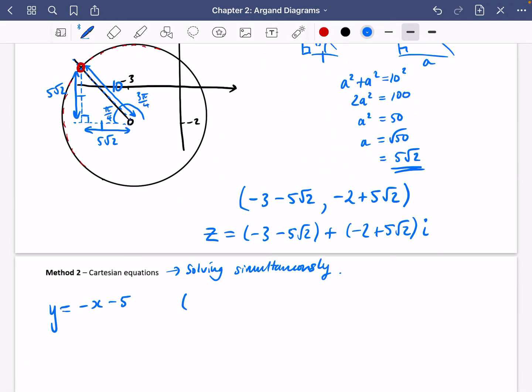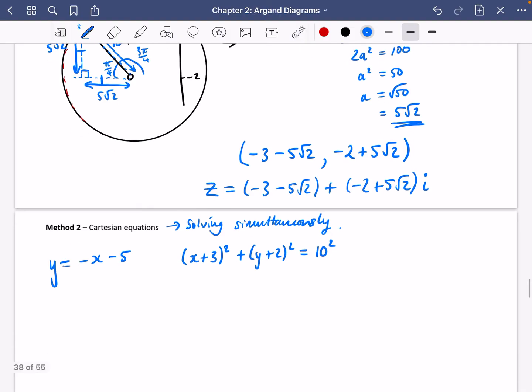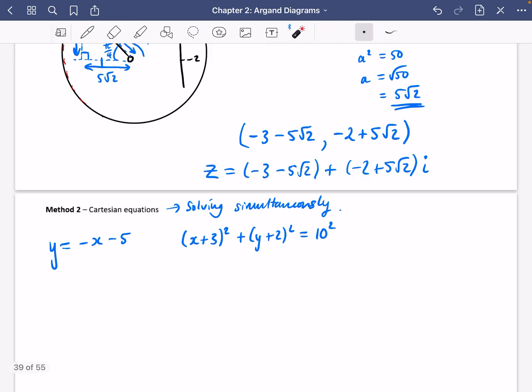So we have y equals minus x minus 5, that's one of the Cartesian equations. And then for the circle, if you remember from earlier on, this would be (x + 3)² plus (y + 2)² equals the radius squared. So I'm going to take this y value here and I'm going to sub it in here.